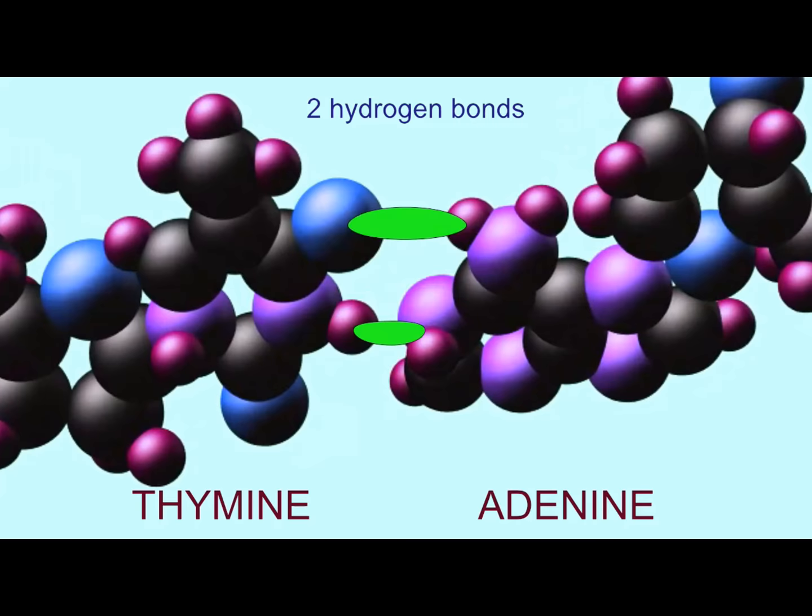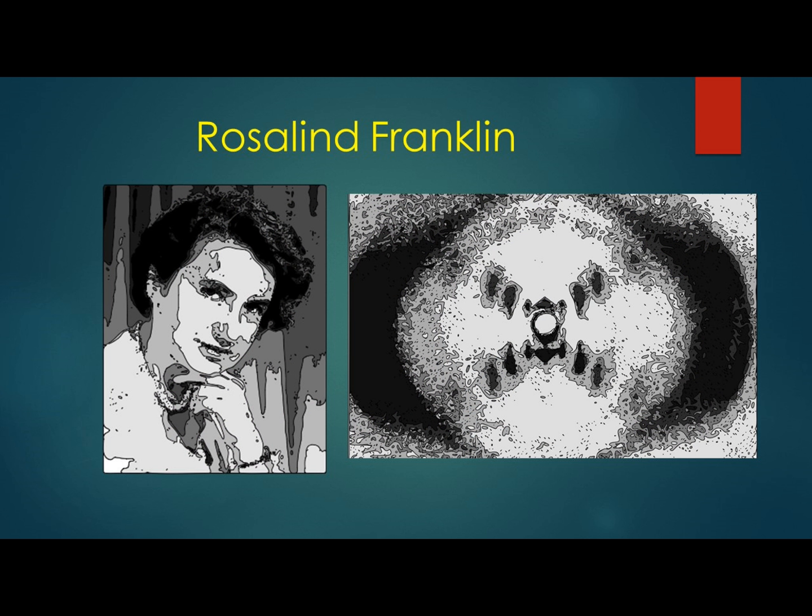This would be critical in determining the structure of DNA. Rosalind Franklin took pictures which would be the key to understanding the double helix nature of DNA. Unfortunately, her work was not appreciated at the time. While the pictures were significant, she did not understand that it was her pictures which had played such a crucial role. And she died young of ovarian cancer, and tragically, the Nobel Prize cannot be granted after death.